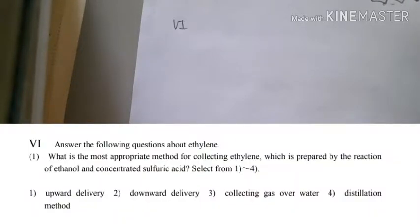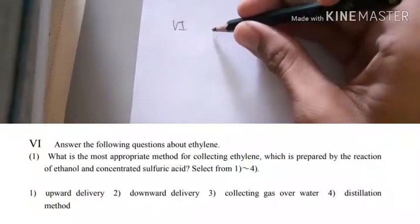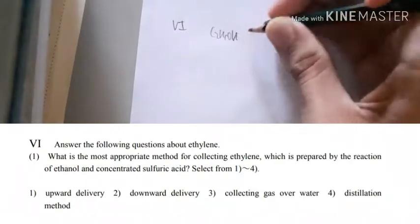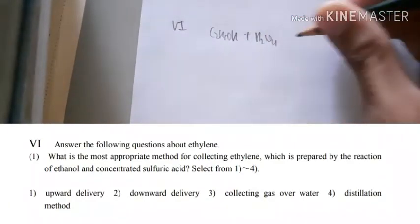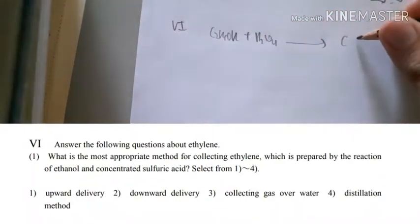Welcome to Mombukagakusho Chemistry 2016, part 6 on ethylene. What is the most appropriate method for collecting ethylene when it's reacted with ethanol and concentrated sulfuric acid? For information, ethanol with sulfuric acid can turn into ethylene.